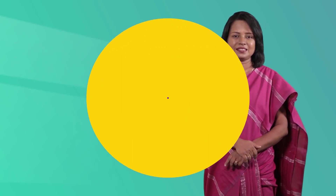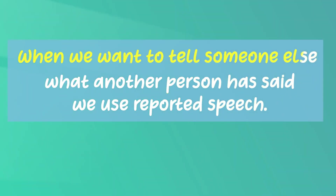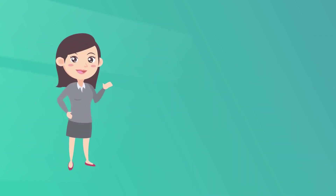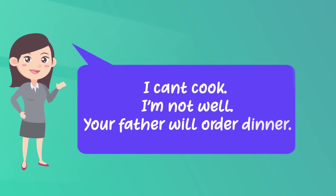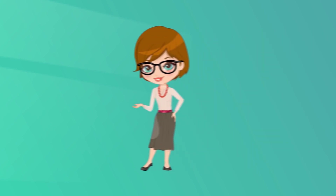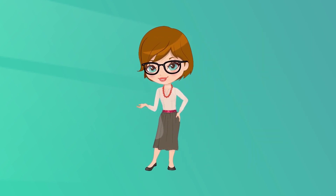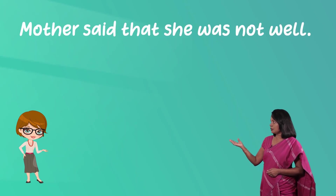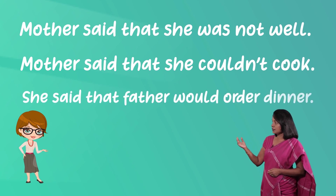Let's start the lesson. When you want to tell someone else what another person has said, you use reported speech. Let's take an example situation. This is Sittumini's mother — she's not well today. This is what she said to her family members: 'I can't cook, I'm not well, your father will order dinner.' Sittumini's brother did not hear this, so he wants to know what mother had said. Sittumini will tell her brother — in other words, Sittumini is reporting what mother said.